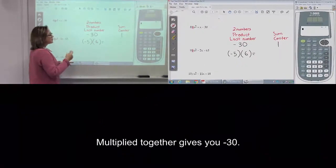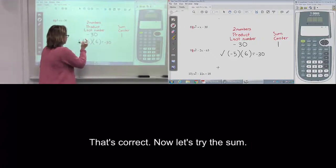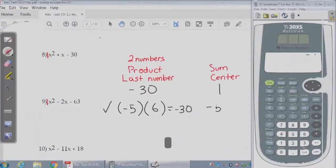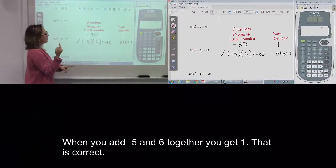5 times negative 6 equals negative 30. Correct. Sum equals plus 1. Correct.